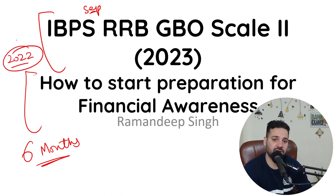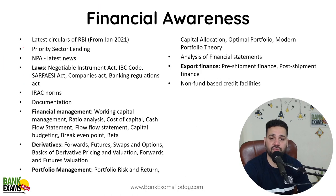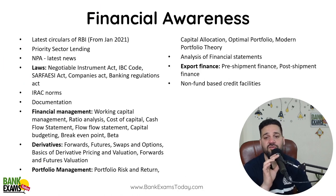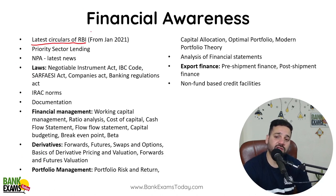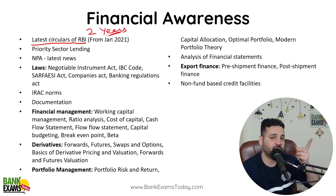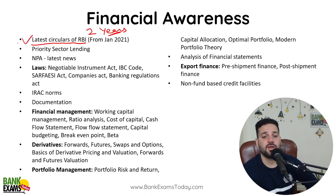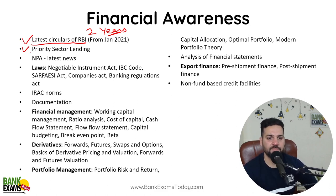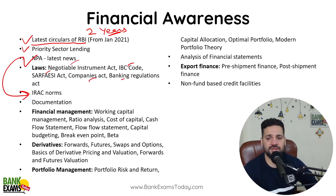We are going to discuss the questions asked in the 2022 exam. First of all, let's discuss what you are supposed to study for the financial awareness section. The first thing is RBI circulars — at least last 2 years of RBI circulars; I would recommend you to start from January 2021. Priority sector lending is very important because you are studying for an RRB. NPA news, because IRAC is also related to NPAs. IBC is also related. Negotiable Instruments Act, Companies Act and the Banking Regulation Act — I know the syllabus is vast, but we have to do that.